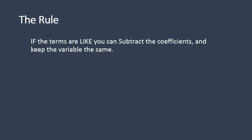Here's the rule written out for you — you might want to pause and write this down. If the terms are like terms, you can subtract the coefficients, or the numbers, and keep the variables the same. Here's an example: you had 17x squared, you subtracted 7 of those x squareds, and you're left with 10x squared. Notice the variable stays exactly the same while the coefficient — the number in front of the variable — is subtracted. 17 minus 7 is equal to 10.